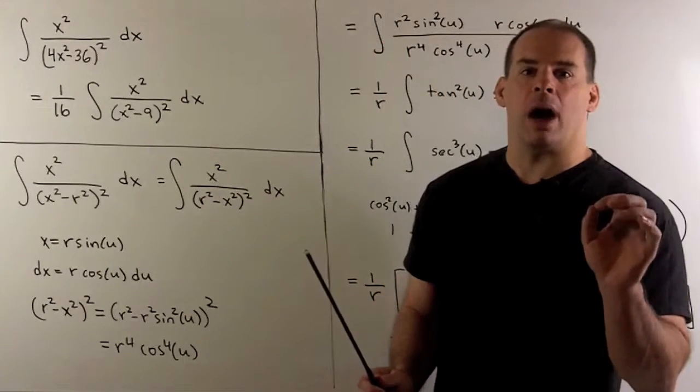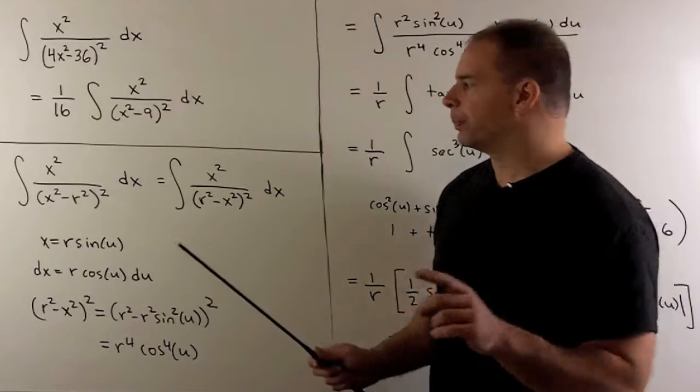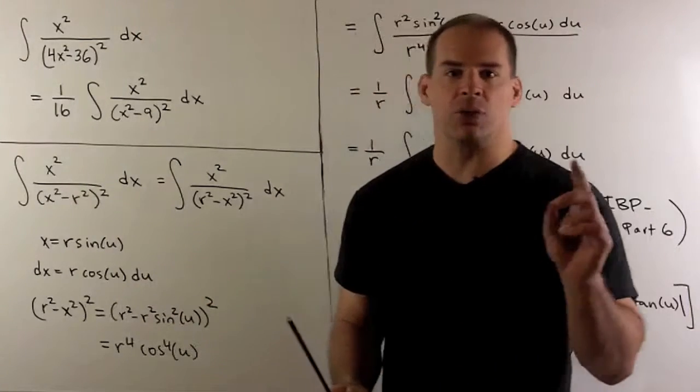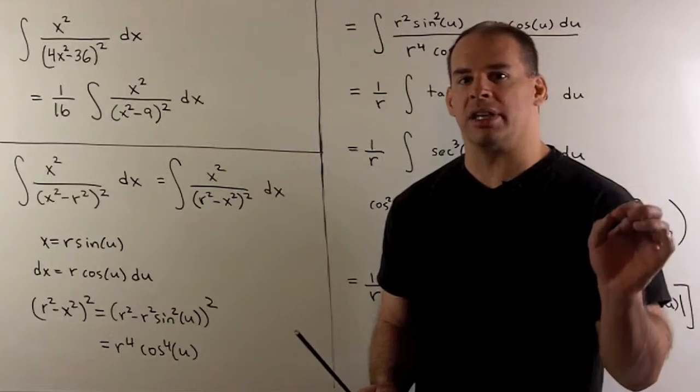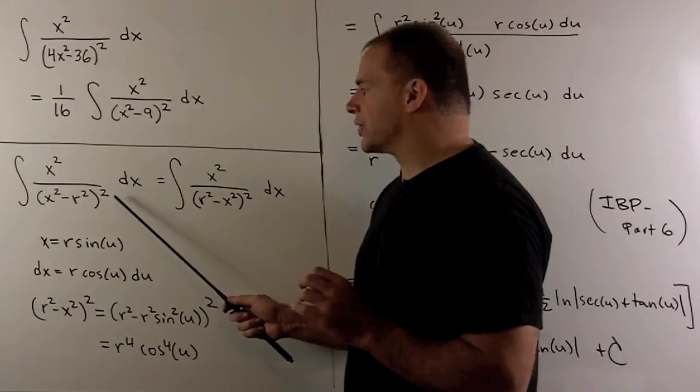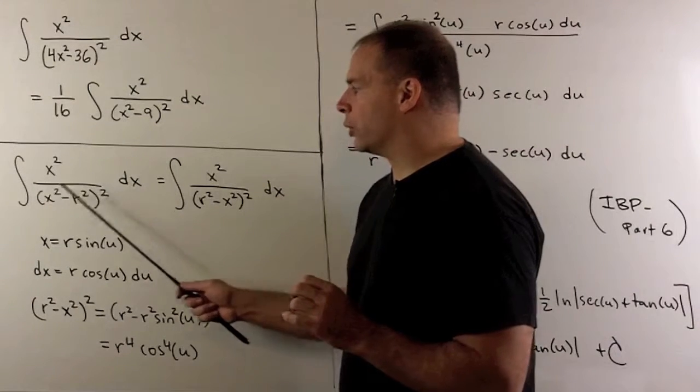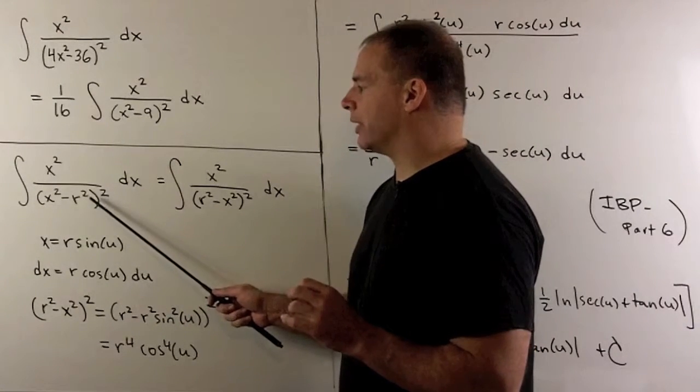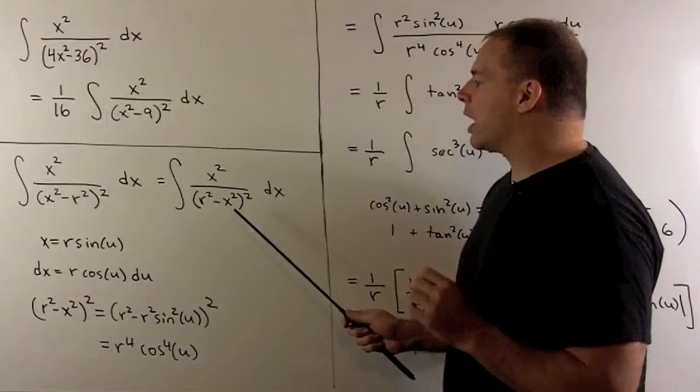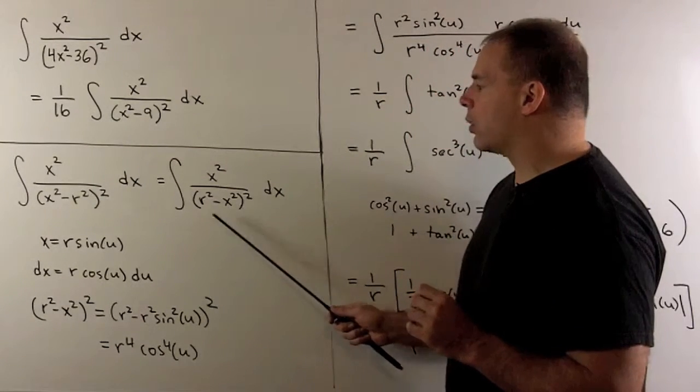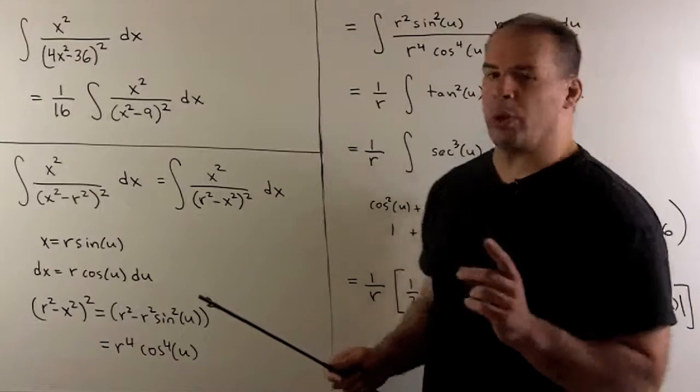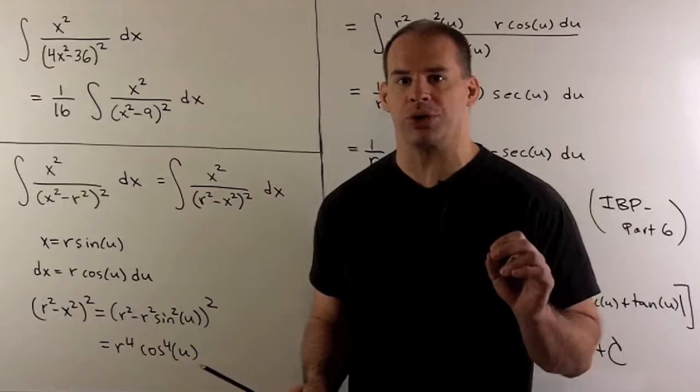Now, if I want to do a trig substitution, if my x squared minus r squared was inside the square root, the substitution would be using a secant or a cosecant. Because I have a square on the outside, I'm allowed to reverse the order. So, we can multiply by a minus 1 on the inside, and then when we square it, nothing happens. So, I'm going to rewrite it as (r squared minus x squared) quantity squared. When we have this, we can use our usual substitutions using sine or cosine.